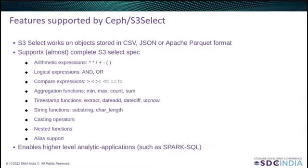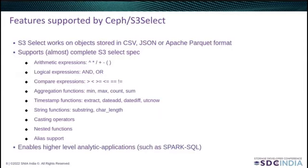The S3 Select API works on multiple types of structured data: CSV, JSON, and Parquet. S3 Select has a definite set of functionalities that should be implemented to stay compliant with AWS, and S3 Select supports the complete specification. The implemented software architecture supports basic arithmetic expressions, logical and compare expressions, aggregation, timestamp and string functions, casting operators, including nested function calls and alias support. That alone enables users reasonable flexibility. S3 Select enables high-level analytical applications to improve their latency and throughput.